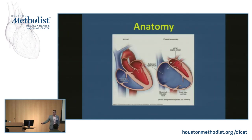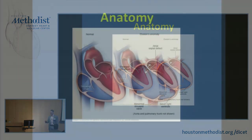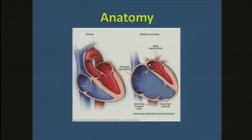This is the single worst example of Ebstein's anomaly you will ever see. I use it only because it allows you to appreciate that the little nubbin of an RV that is left when you have displacement of the right-sided AV valve — the tricuspid valve — towards the apex of the heart is what causes a lot of problems.